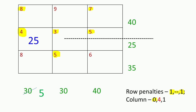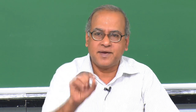The second column now has the largest penalty of 4. Having identified the second column with the largest penalty, we try to put as much as we can in the least cost position in that column, which happens to be the position with cost 5. 35 is available and 30 is required, so we put the minimum of 30 and 35, which is 30, in this position. This completely meets the requirement of the second demand point, and 30 out of the 35 available has been consumed, leaving only 5 remaining.